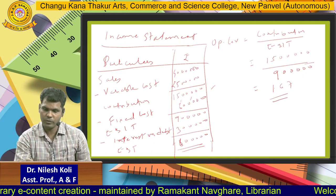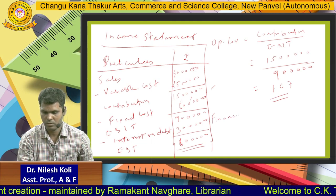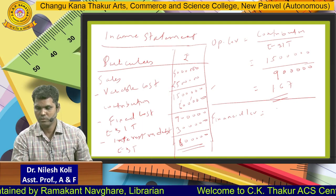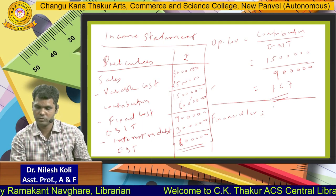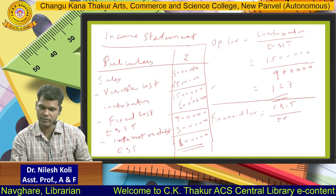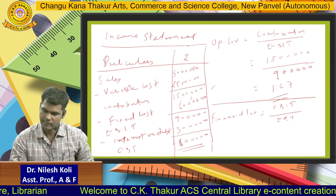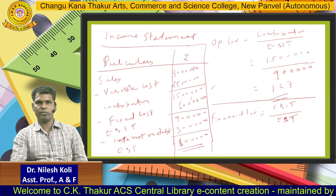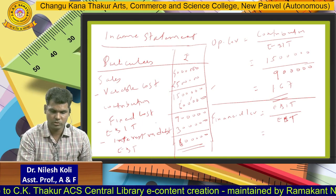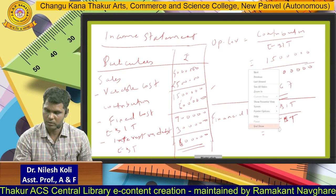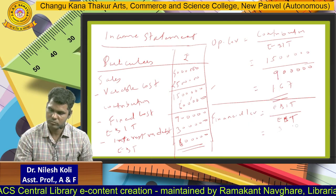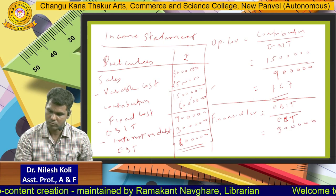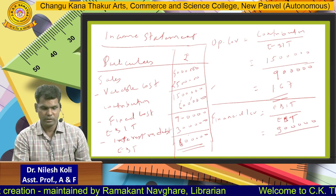Then further we will see the Financial Leverage. The formula for Financial Leverage is: EBIT / EBT. EBIT is 9 lakhs. What is the EBT?